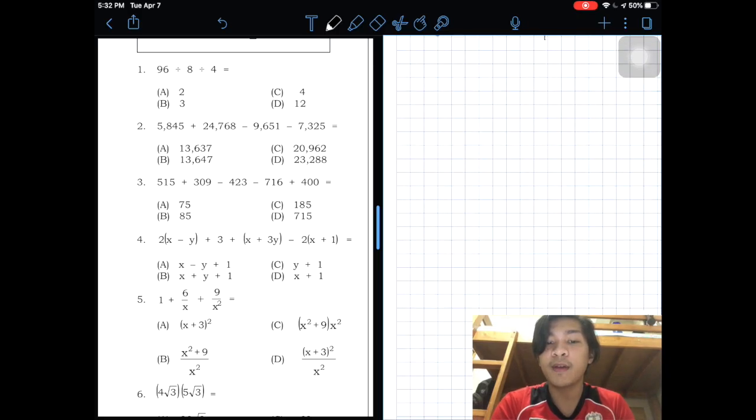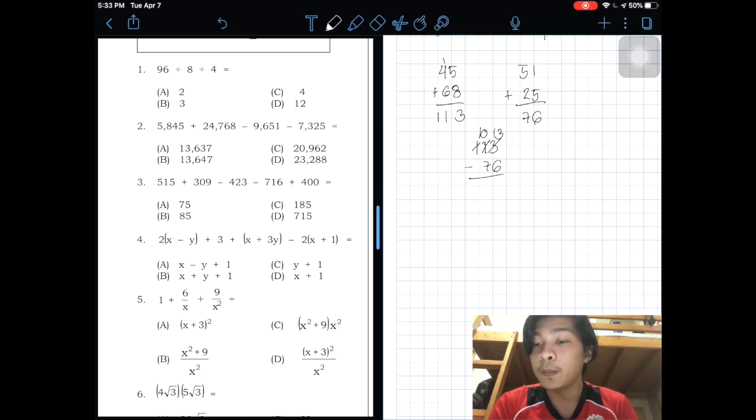Next number. It is 5,845 plus 24,768 minus 9,651 minus 7,325. The tip here, just get the tens and ones digit. So it is 45 plus 68, which is 113. Then for the two negative numbers, 51 plus 25, the answer is 76. Now, 113 minus 76. 13 minus 6 will be 7. You can eliminate C and D. Then 10 minus 7, which is 3. So the answer is letter A.